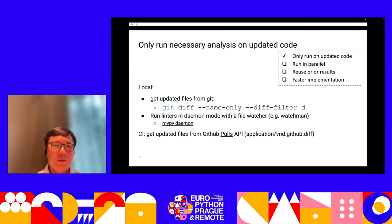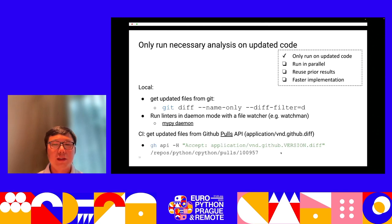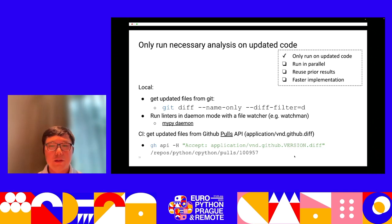In CI, when developers propose a change, they only update a few files in their pull request, so we can get the updated file list from the GitHub API. For a given pull request, we can get the list of updated files and provide them to the linter to run faster.